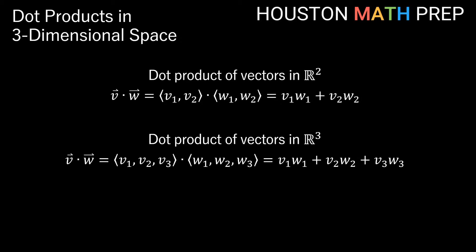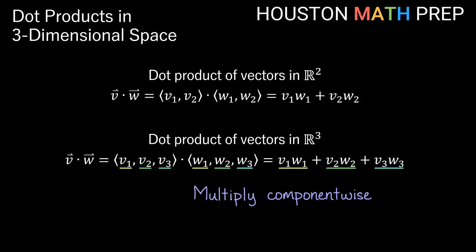The process is the same in 3D space with three-dimensional vectors — we just have an additional component in each vector. So we multiply component-wise, which will now be three multiplications. V1 and W1 give us the first product, V2 and W2 the second, and V3 and W3 give a third product. Then we add all those values up, and that gives us our dot product.